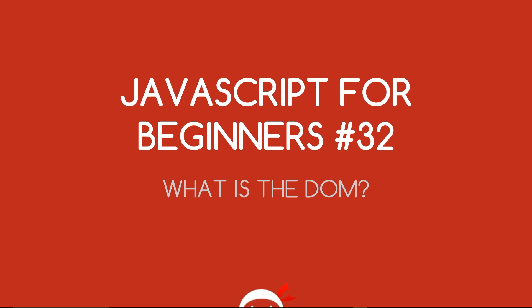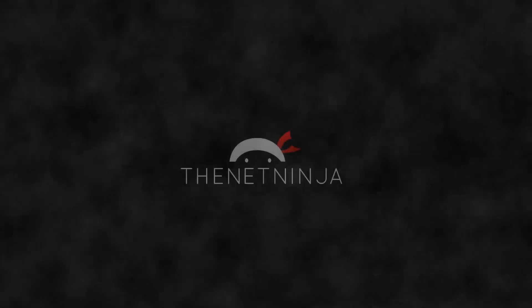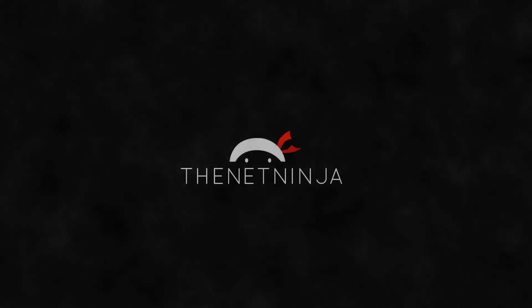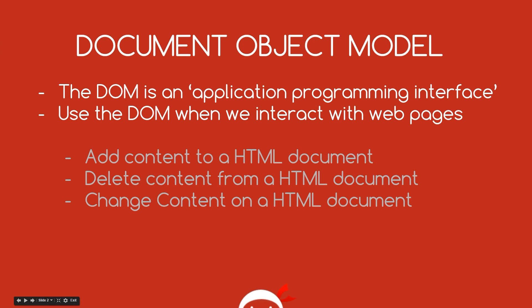What's going on guys? You're watching JavaScript for Beginners Lesson 32 and in this video we're going to talk about the DOM. So what is the DOM? Well, the DOM is just an acronym and it stands for Document Object Model.